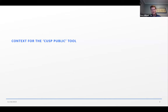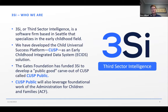In our discussions with states, we find that invariably the data that states need is not readily accessible or available in some of the tables available through things like the American Community Survey. A huge amount of our work has been to find ways to add value to those data to make them readily usable. 3SI, again Third Sector Intelligence, is a software company. We have developed an ESID solution called CUSP, the Child Universal Success Platform. CUSP is the full meal deal ESID solution. The Gates Foundation has funded 3SI to carve out what we call a public good from CUSP, which is CUSP Public, and it's going to be freely available to anyone — states, et cetera — who would like to access the data.